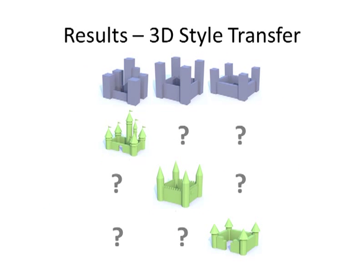Next we show a set of style transfer examples on castles. The green model on each row is the exemplar. The corresponding model on the first row is the source, and the remaining 2 are the target models.